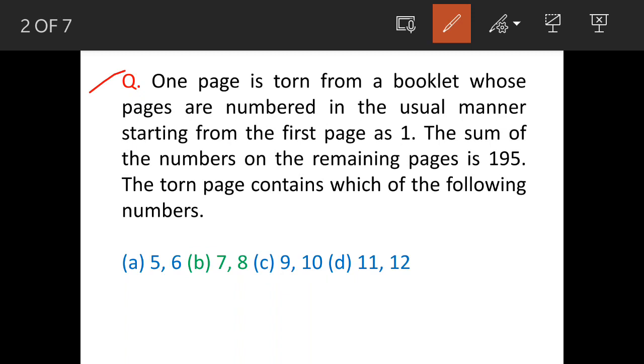One page is torn from a booklet whose pages are numbered in usual manner starting from first page as one. So there is a book and pages are numbered one onwards: one, two, three, four, etc. And one page is actually missing, then maybe page is missing here and so on up to n.